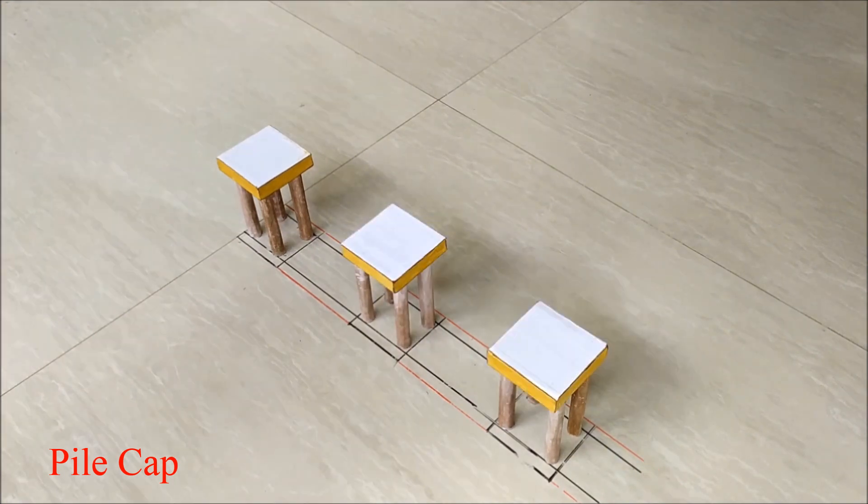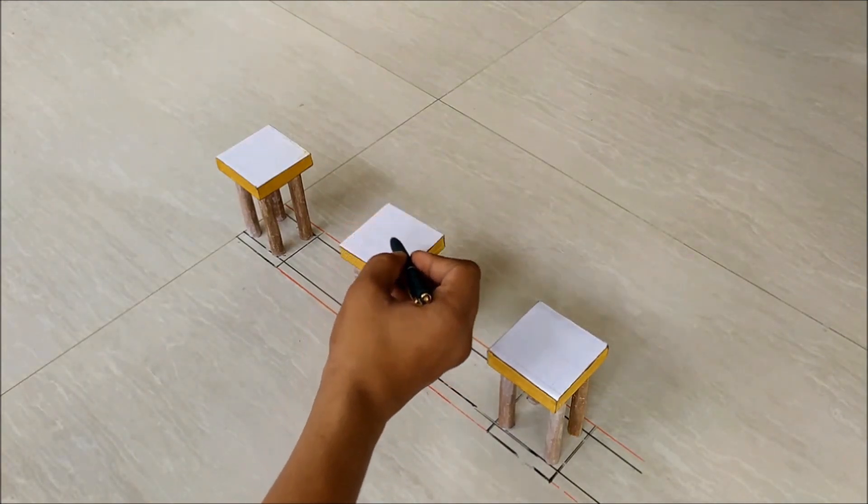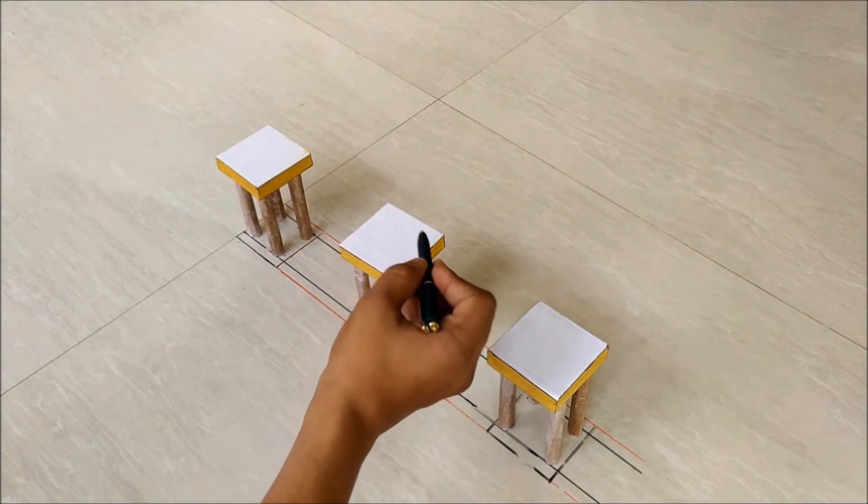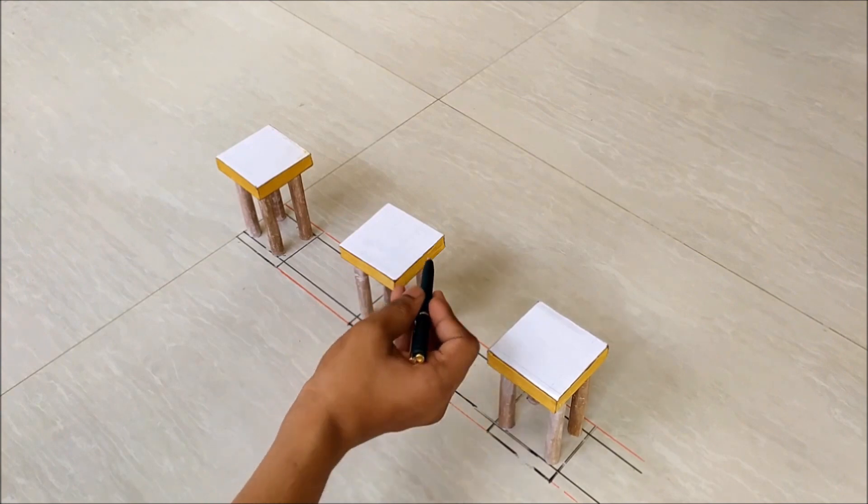The rectangular concrete blocks above the group of piles showing in the model are called pile caps. Pile cap is a slab above the piles which combines all piles to act as a single member which withstands the load and distributes the loads of structure into all piles.